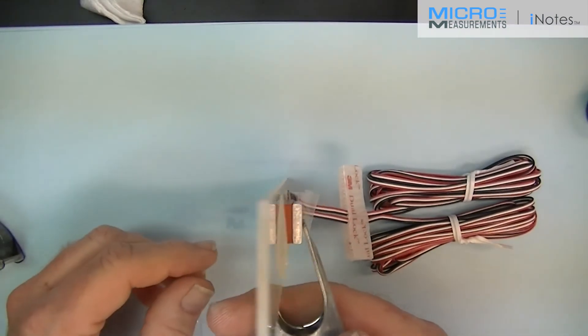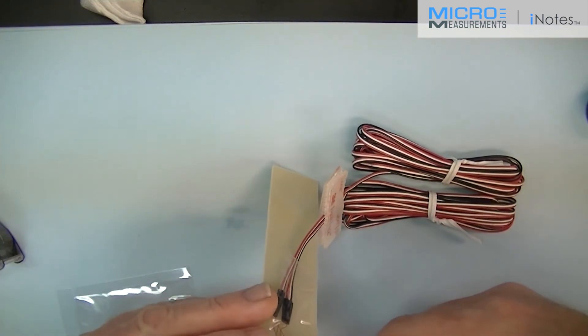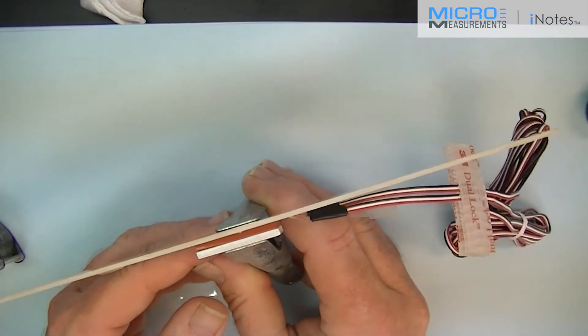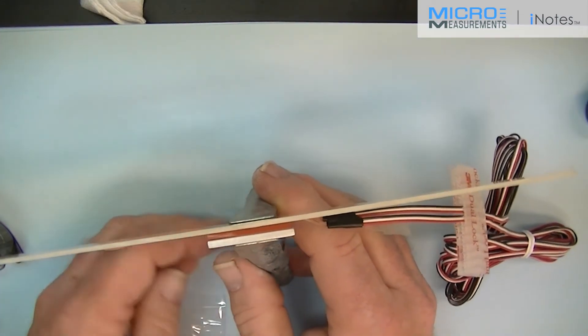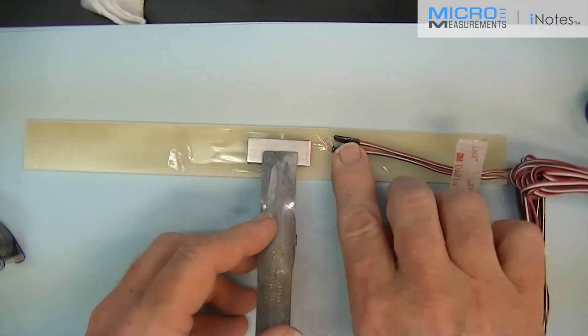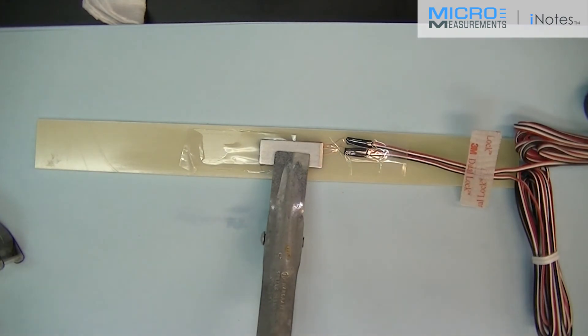I'm now going to check to make sure that the aluminum backing plate and the fiberglass beam are parallel to one another, both in this direction and this direction. Ensuring that I have even clamping pressure. I now leave it for a minimum of six hours if I'm going to cure it at room temperature. Or I can elevate the temperature and cure it quicker through an oven process.